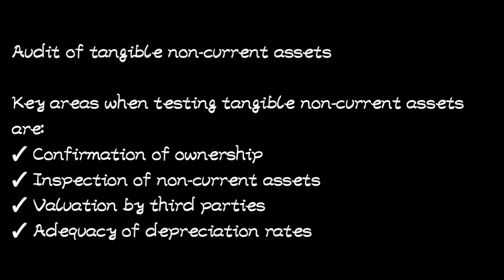Let's look at the audit of tangible non-current assets — fixed assets — continuing with topic five on substantive procedures. We are dealing with assets that stay in a business for a period longer than one year. The key areas the auditor is supposed to concentrate on when testing tangible non-current assets: the first one is confirmation of ownership — the auditor has to confirm whether the assets belong to the entity or not.